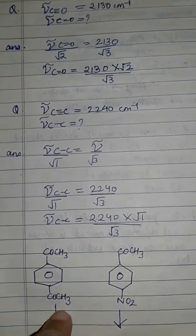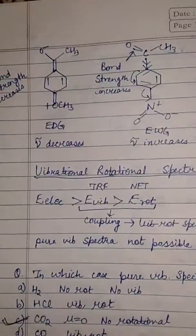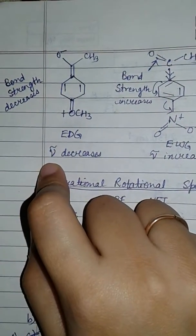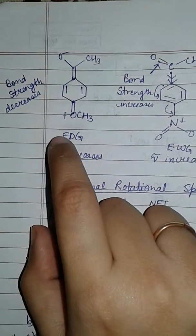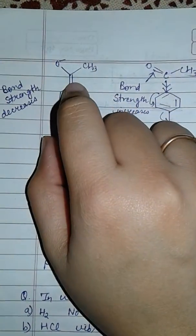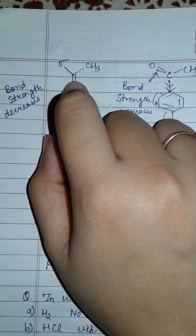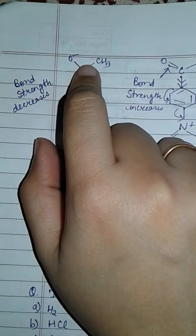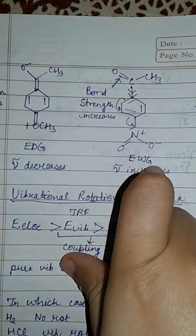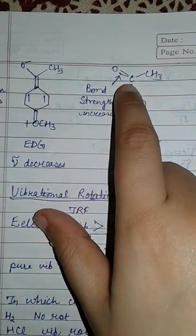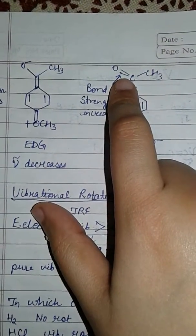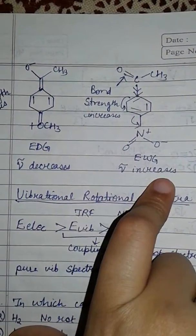The carbonyl frequency decreases when there is an electron donating group because the bond strength of C=O decreases. Whereas when we add an electron withdrawing group, the bond strength of C=O increases because there is a double bond in C=O, so the frequency also increases.